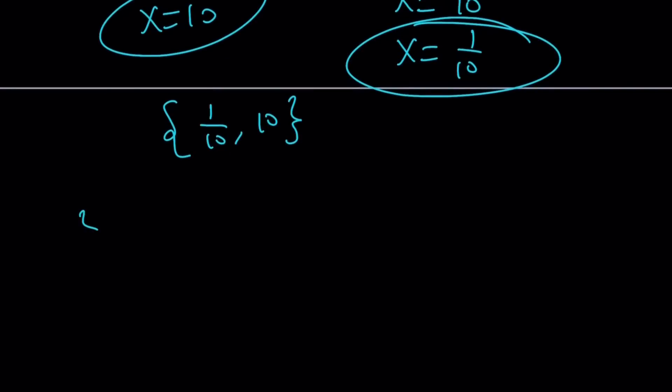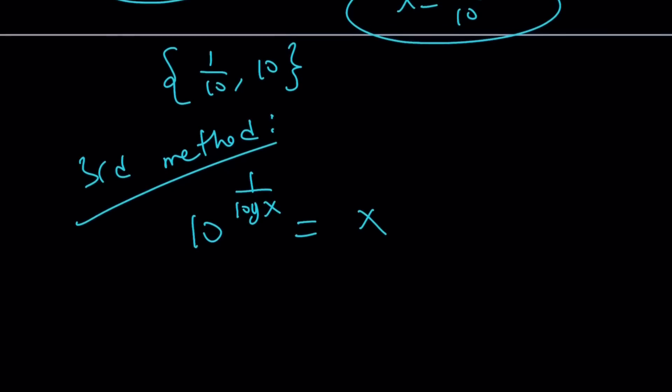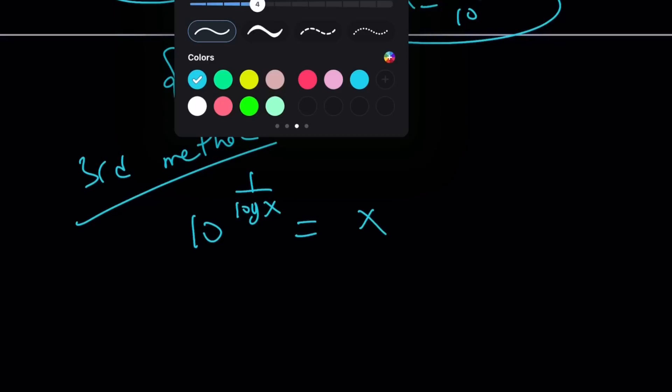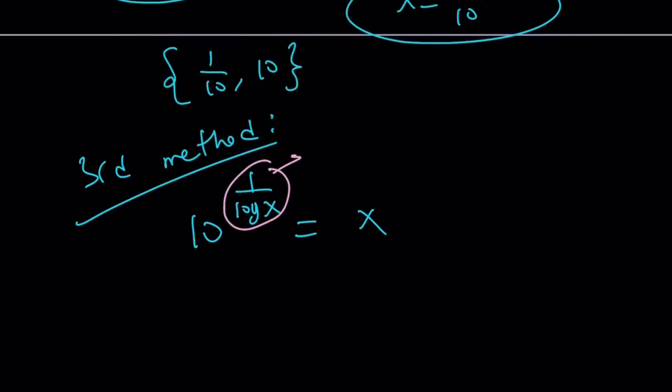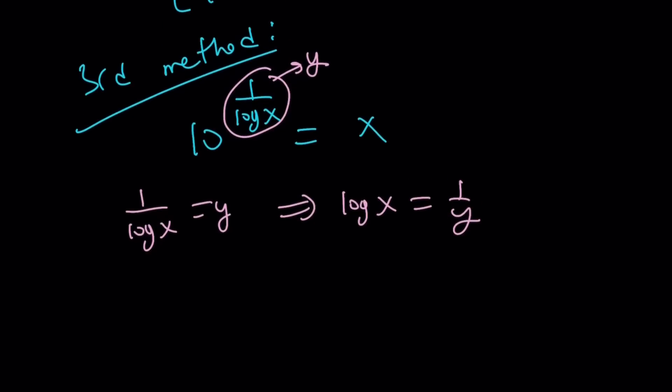Now let's go ahead and try a third method even though I wasn't planning. Everything here was totally unplanned. You can tell I'm really haphazard and disorganized. I know some people are not going to like it because they want everything super duper organized. But I'm not organized. So let's try calling this whole thing y. And then we're going to get 1 over log x equals y. And maybe it's good to just switch them around and write log x as 1 over y.